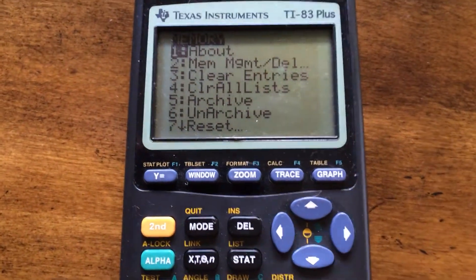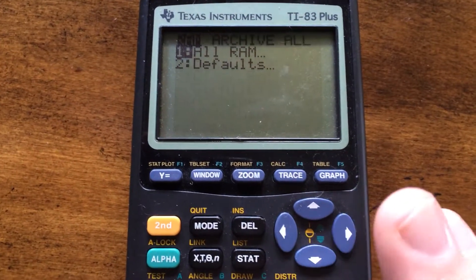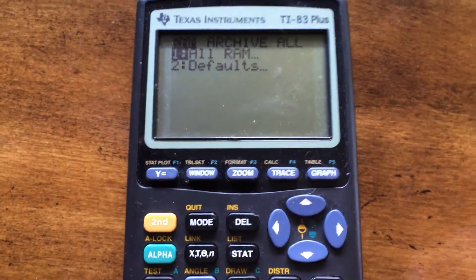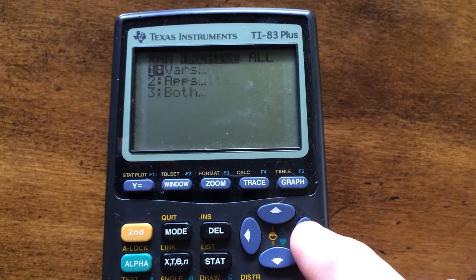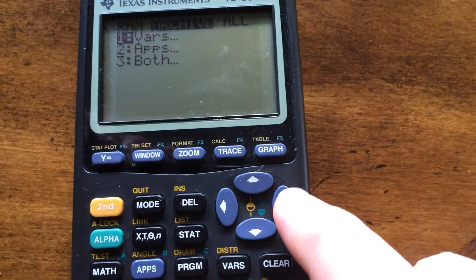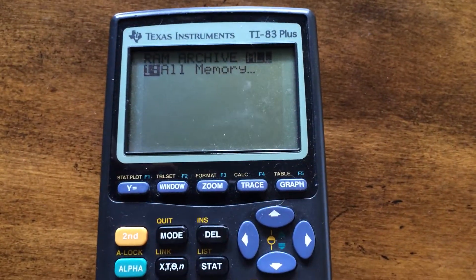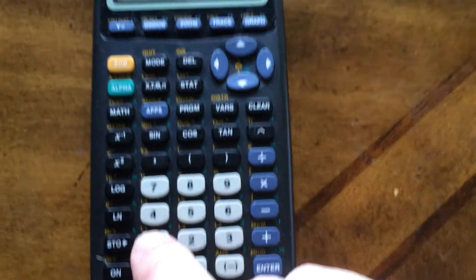Alright, then you're going to either scroll down or hit number 7 where it says reset. And then we're going to go over here, hit this side button twice. And we're going to want to do all memory. And so we just hit one.